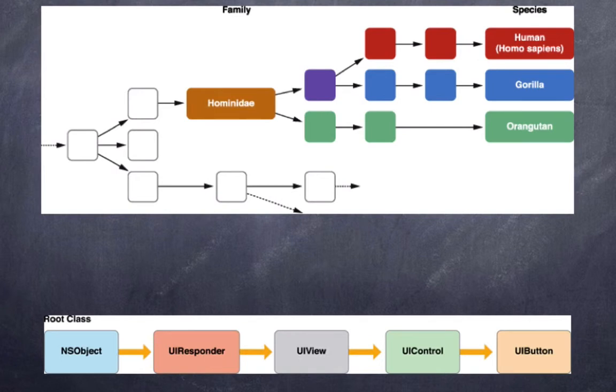Now, as we go down through the chain, maybe gorillas have some unique properties that are unique to them and humans have properties unique to them and orangutans have properties unique to them. But certainly, some properties were acquired in the family and then all the what we call subclasses in programming. We call them subclasses when a class inherits from another class. So we can think of humans, gorillas and orangutans as subclasses of the same family. They inherit the properties of that family.